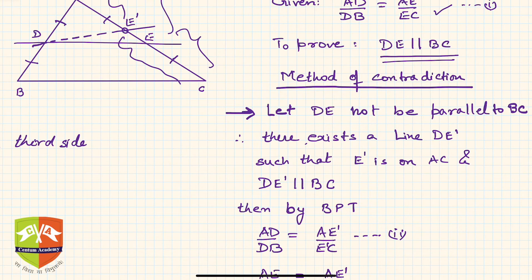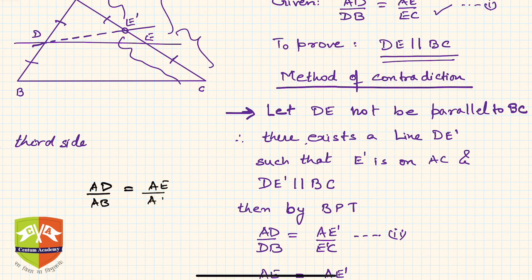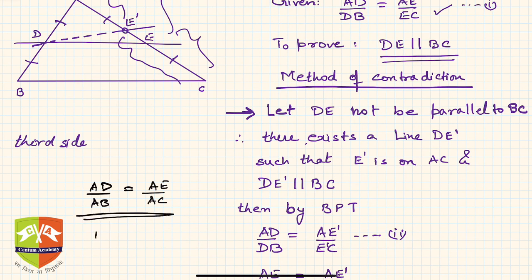Now we learned lots of corollaries to BPT in the last session, so if any of those corollaries are also true, then DE would be parallel to BC. For example, if AB/AD = AC/AE is given, then also DE will be parallel to BC. This is the Converse of the Basic Proportionality Theorem.